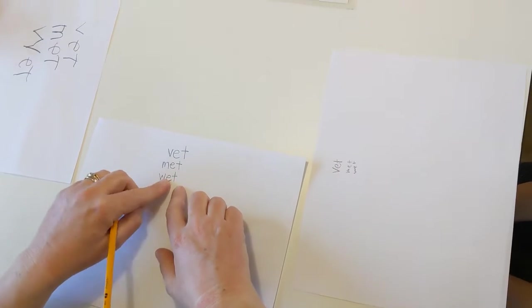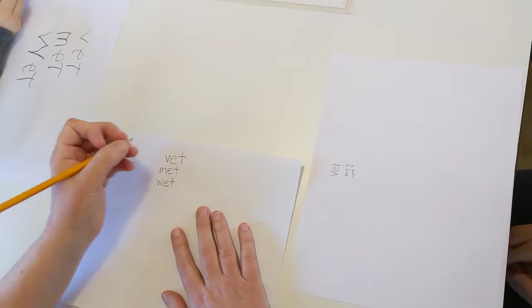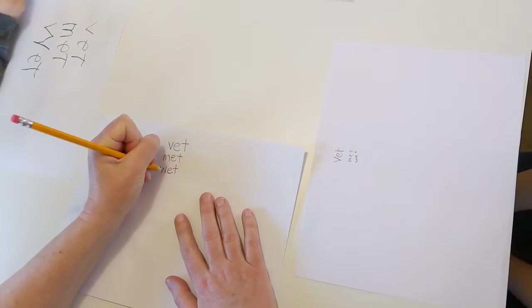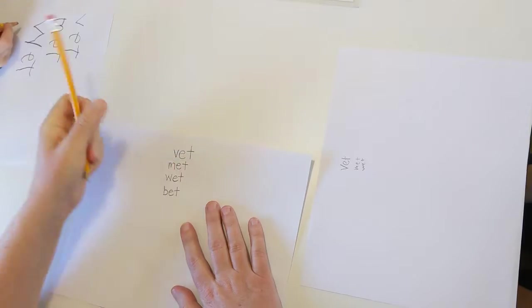With. With. But I don't have it yet. I have to change that E. You can only change one thing at a time. So I'm going to change it. Let's see. What I'm going to do is change the W to a B. Bet. Bet.